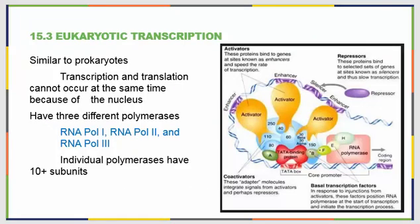Eukaryotic transcription is similar to that of prokaryotes. However, transcription and translation cannot occur at the same time because of the existence of the nucleus and the nuclear envelope. In eukaryotic transcription, there are some differences in the enzymology that make the process more complex. For example, there are three different RNA polymerases that work inside eukaryotic organisms, simply labeled RNA Pol 1, 2, and 3.